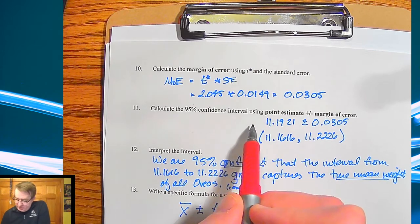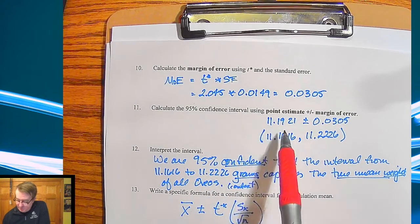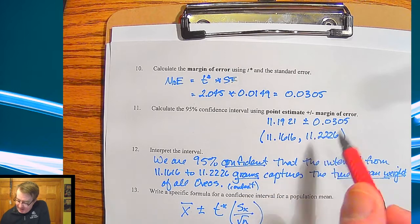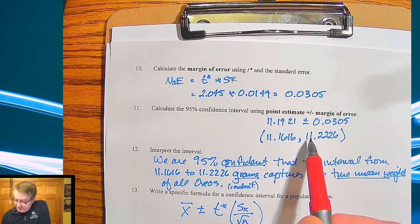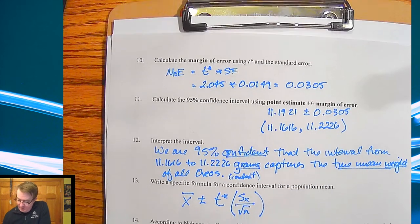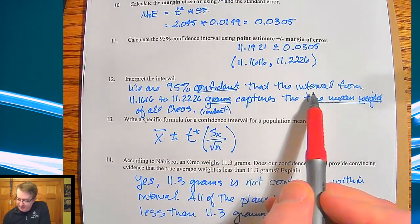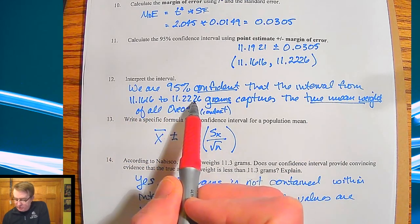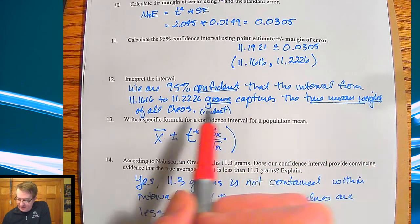So then what we're going to end up doing is we're going to do just like what we did before we're going to add or subtract that from our point estimate. So my point estimate was 11.1921 grams and so that's going to add I'm going to add and subtract that so that moves me out from 11.1616 up to 11.2226. So to interpret this just like what we did before we are 95 percent confident that the interval from 11.1616 to 11.2226 grams notice I have context here captures the true mean weight of all Oreos. Again more context there.